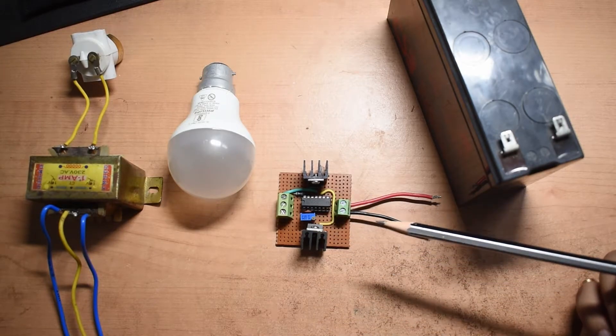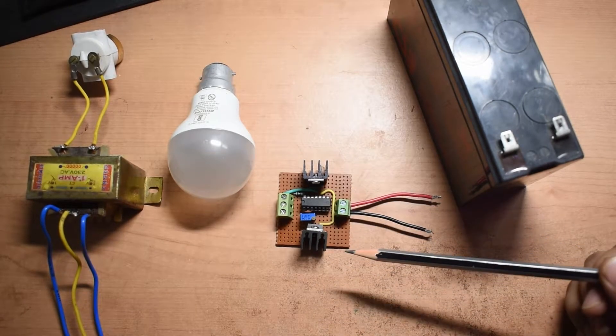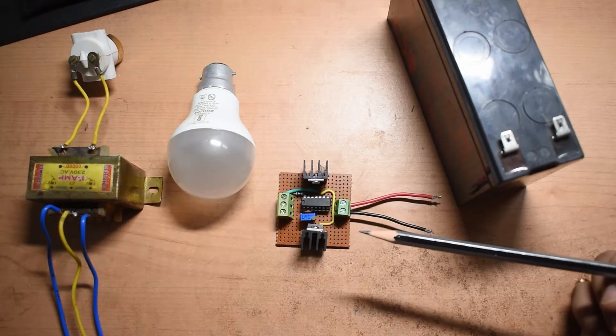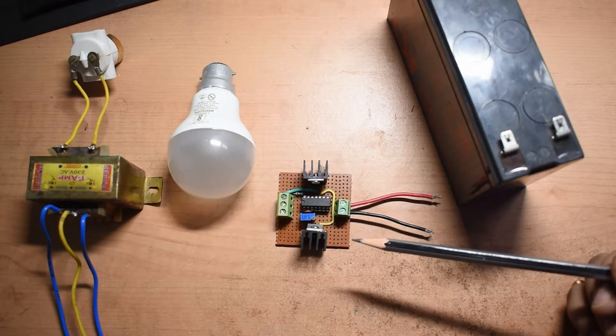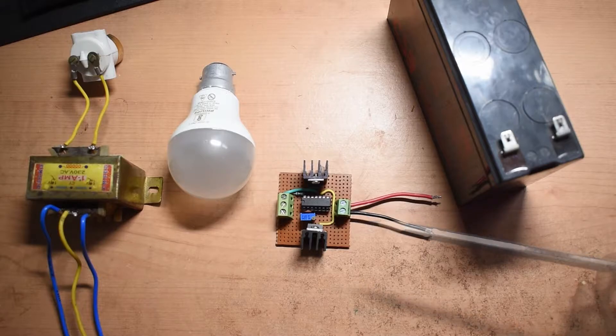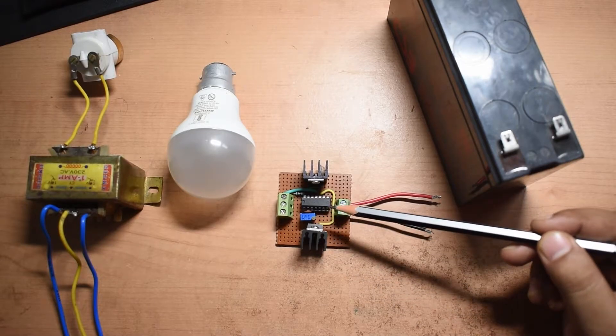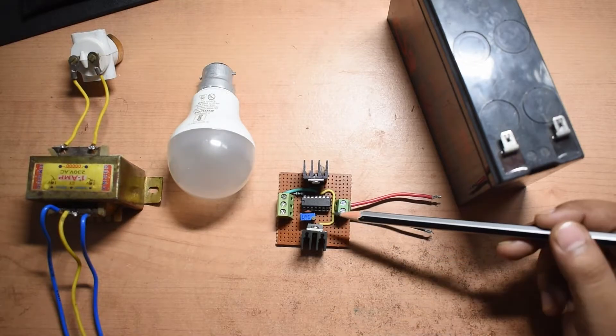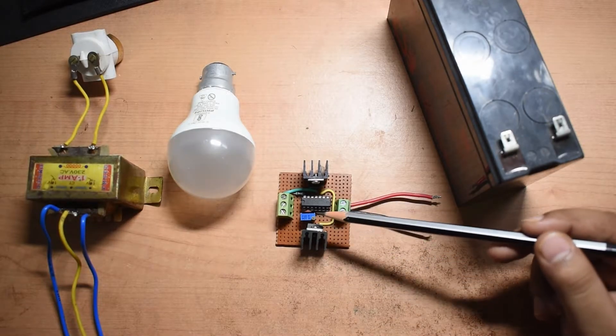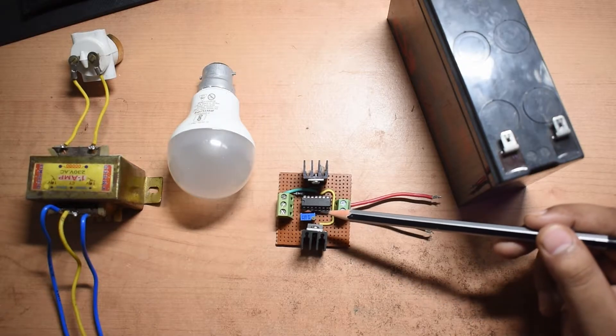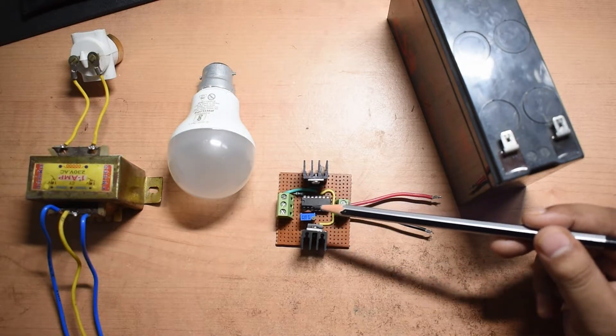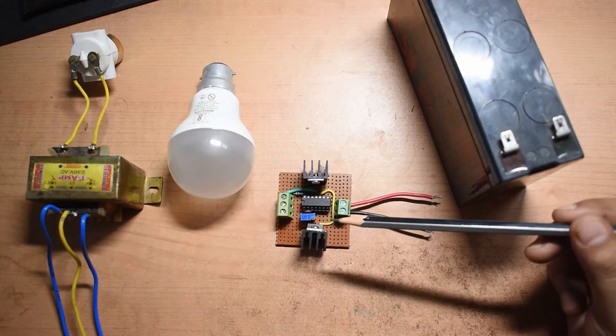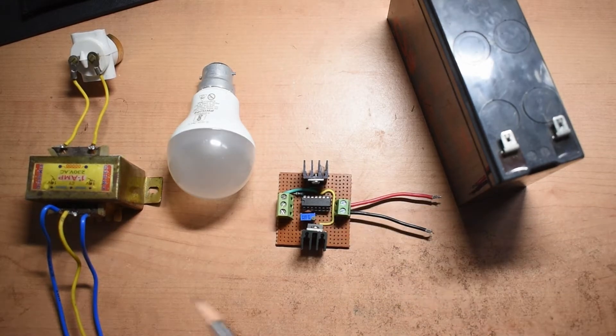Before I start I must tell you that this is not a sine wave inverter, it's just a square wave inverter which you can obviously use for lighting purposes and many small applications. The heart of this circuit is the CD4047 IC which is a CMOS chip that we are going to use to make the waveforms. The output frequency of this circuit is 50 hertz.